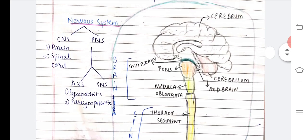The nervous system is divided into CNS and PNS, that is central nervous system and peripheral nervous system. In the central nervous system comes our brain and spinal cord. The peripheral nervous system is again divided into two: ANS, which is autonomic nervous system, and SNS, which is somatic nervous system. The ANS is also divided into two: sympathetic and parasympathetic nervous system.